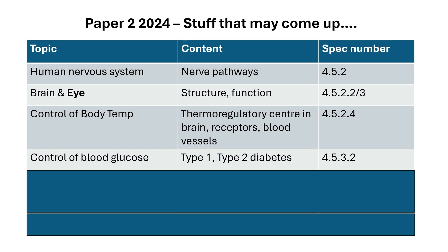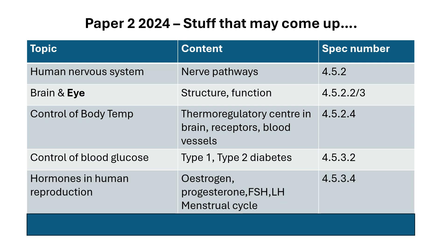Control of blood glucose — there was a big question on insulin and glucagon last year, but nothing about type one or type two diabetes. Hormones in human reproduction would be a good six-marker or a data/graph-led exam question — things like oestrogen, progesterone, FSH, LH, and generally the menstrual cycle.